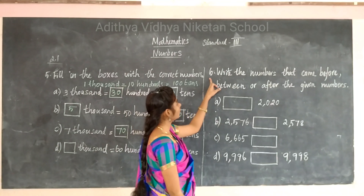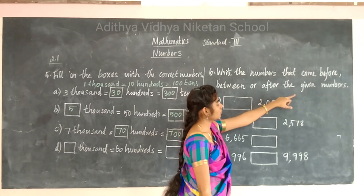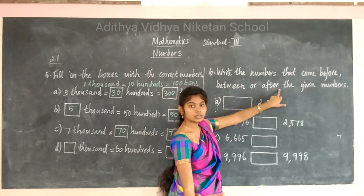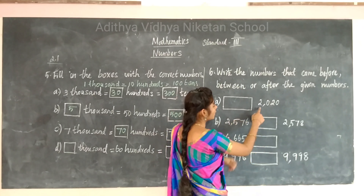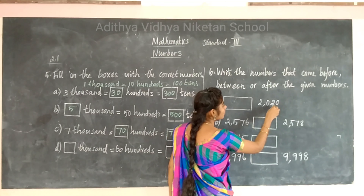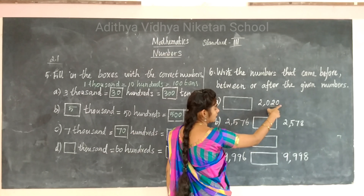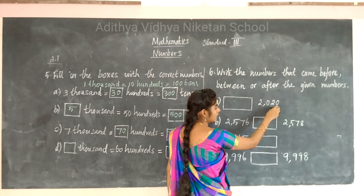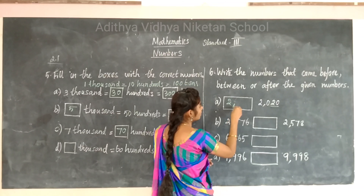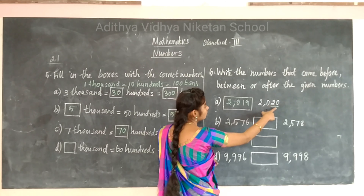Now we move to the next two problems: write the numbers that come before, between (BP), and after the given numbers. See the first one — the given number is 2020. Look at the last two places: before 20 is 19. So the number before 2020 is 2019.